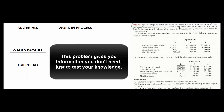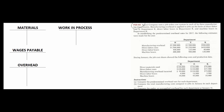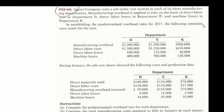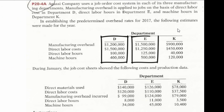Let's take a look at this problem. It's pretty typical in that it gives you a lot of information you don't really need. Agassi Company has three different departments, each with a different overhead application rate.